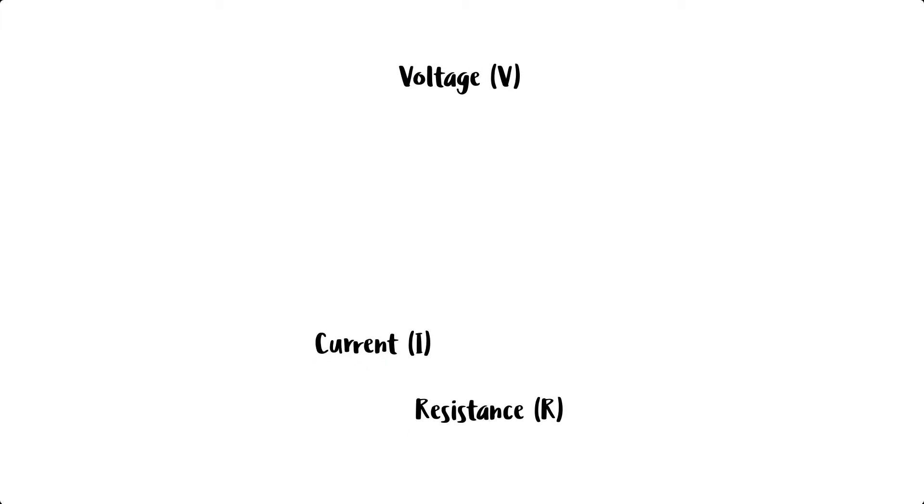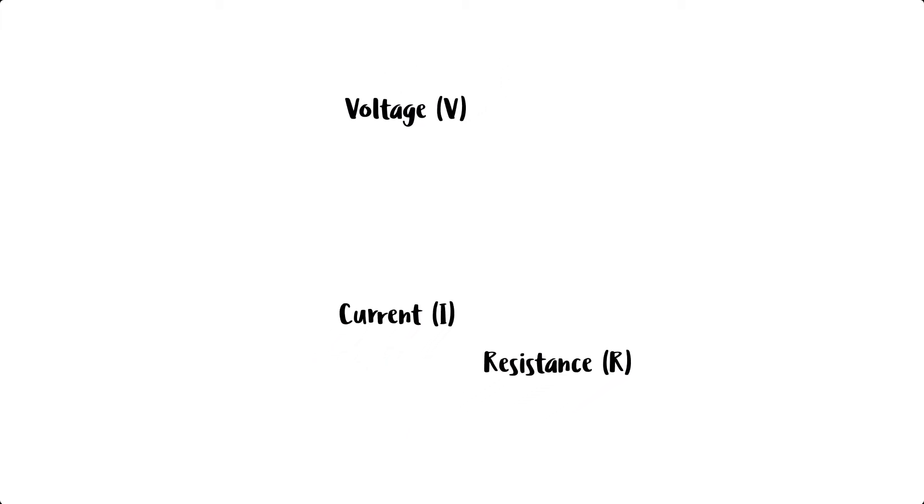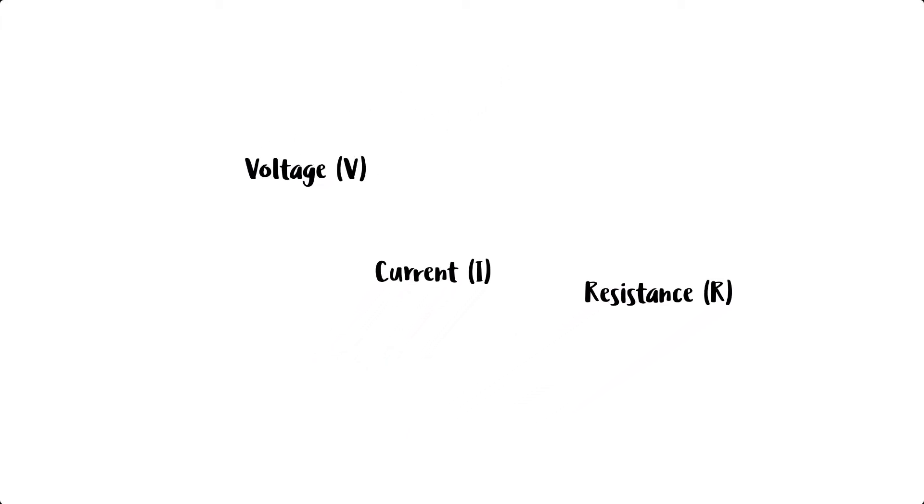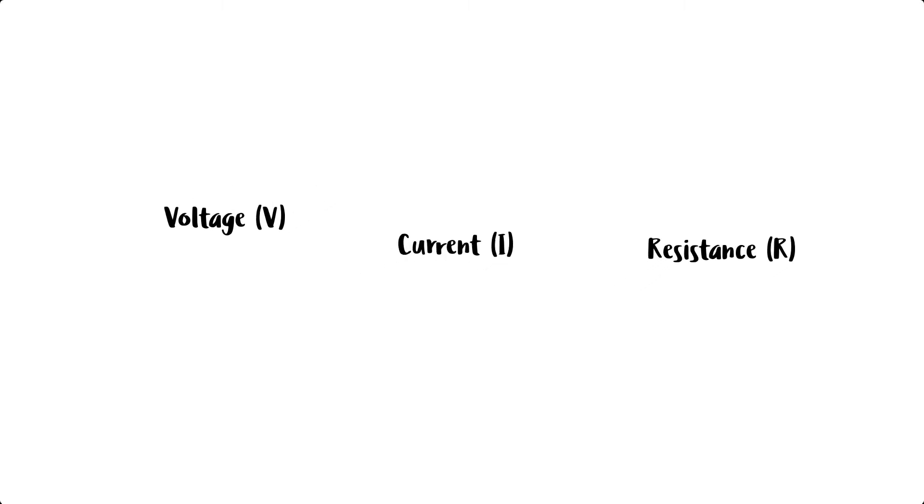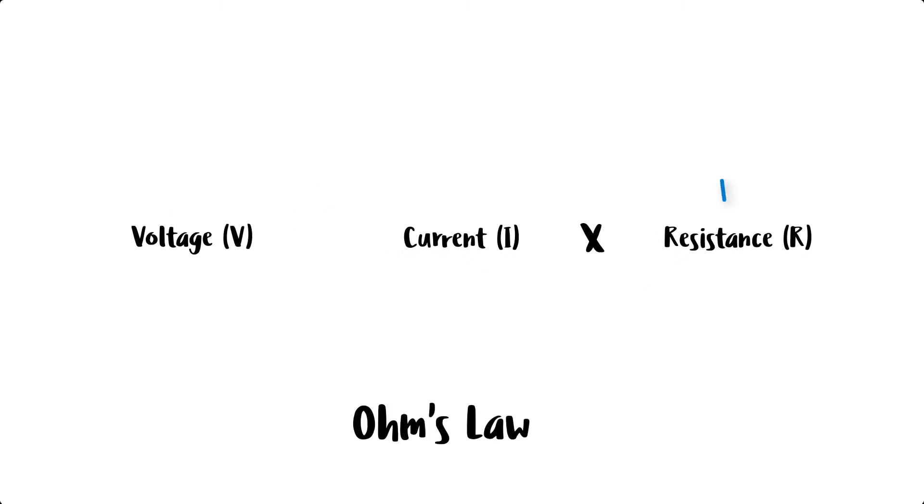Ohm's law tells us that voltage equals current times resistance. So with a constant current, an increase in resistance causes an increase in voltage.